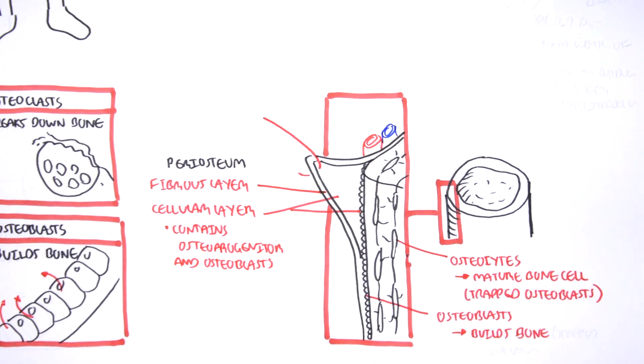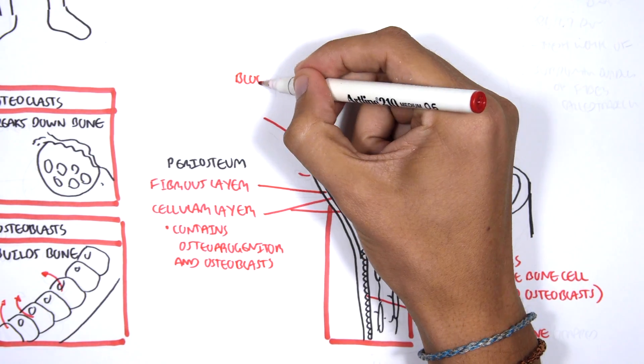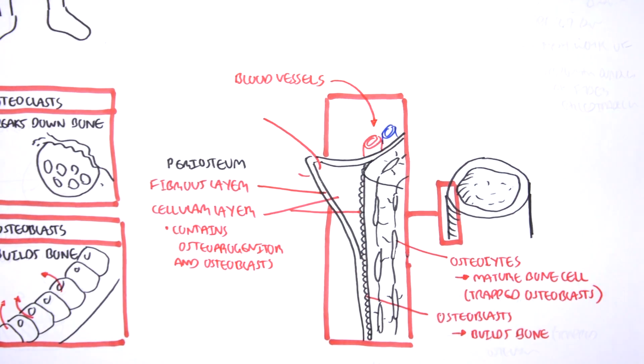Surrounding the periosteum are the blood vessels, which penetrate the bone through canals, which allows it to supply the inside of the bone. It is important to know that the bone itself does not actually have any pain fibers, but the periosteum does.